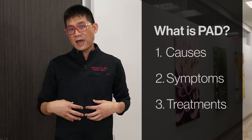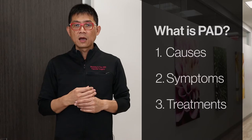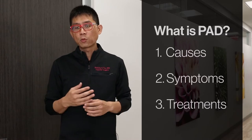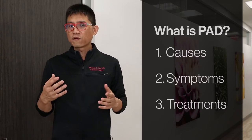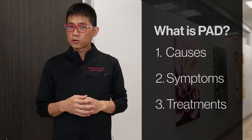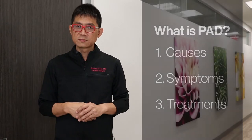But peripheral artery disease, or PAD, specifically is talking about vascular disease that affects the arteries of the arms, the legs, the abdomen, and the neck. Most of the time when we talk about PAD, we're really referring to vascular disease that affects the arteries of the lower extremities.